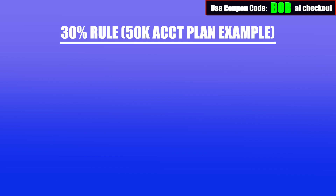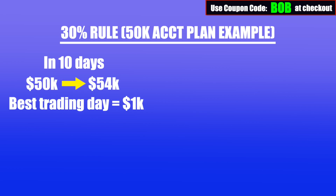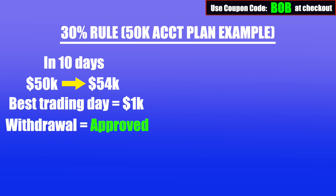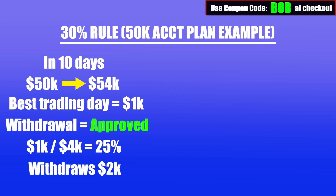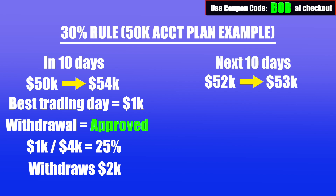Let's use the 50k account size plan to illustrate this. Say you traded for 10 days and increased the starting balance from 50k to 54k, and your best trading day within those 10 days was $1,000. Your withdrawal would be approved because $1,000 of the $4,000 profits you've made accounts for 25% — well below the 30% threshold. So you decide to withdraw $2,000, bringing the account balance from 54k to 52k. You trade again for the next 10 days and increase the balance back up to 53k, ready to make another withdrawal. However, your current P&L balance this time is $3,000 instead of the $4,000 before your first withdrawal.